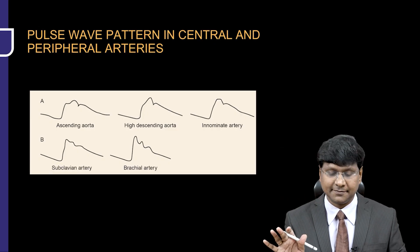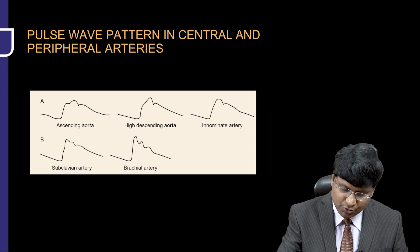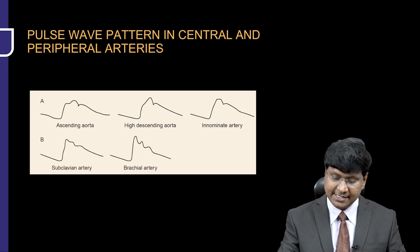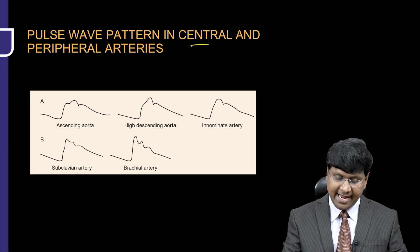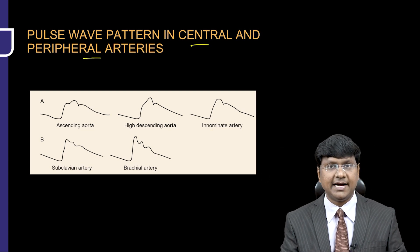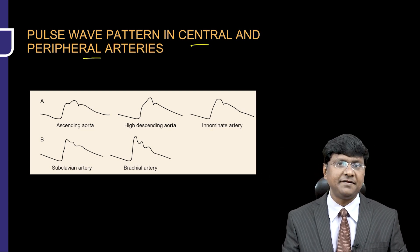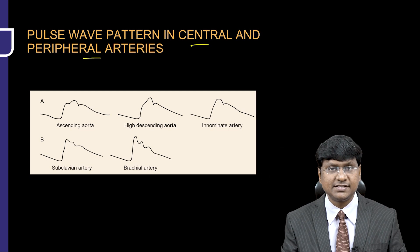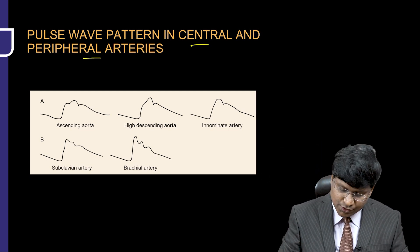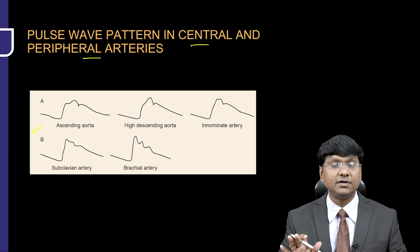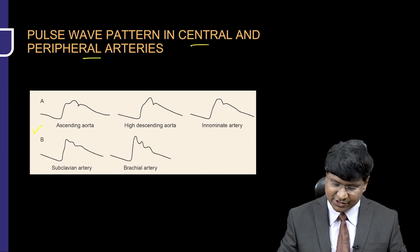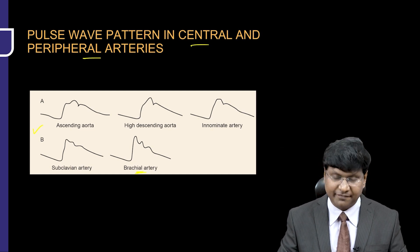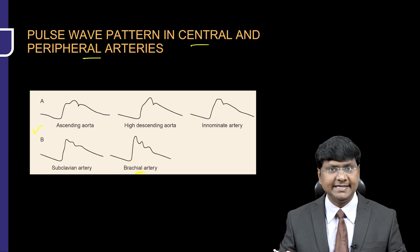The pulse wave pattern is different in the central vessels — that is your carotids and others — and it is different in the peripheral arteries, such as the radial artery and the dorsalis pedis artery. So this is the pattern of the waveforms in the central as well as the peripheral vessels. Let me discuss them in detail.